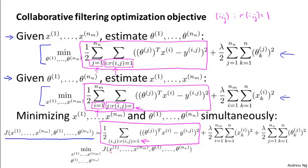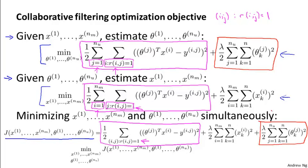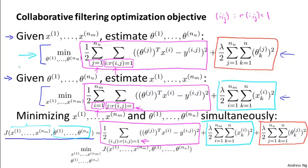What we're going to do is define a combined optimization objective that we want to minimize simultaneously for x and theta. The other terms in the optimization objective include regularization in terms of theta, and the final piece is the optimization objective for the x's. This objective J has an interesting property: if you hold the x's constant and minimize with respect to the thetas, you'd be solving exactly the first problem. Whereas if you hold the thetas constant and minimize J only with respect to the x's, it becomes equivalent to the second.